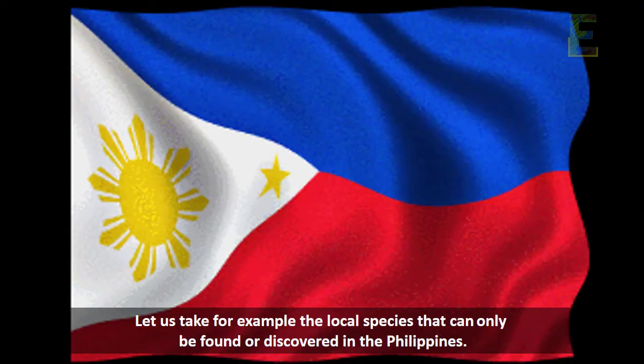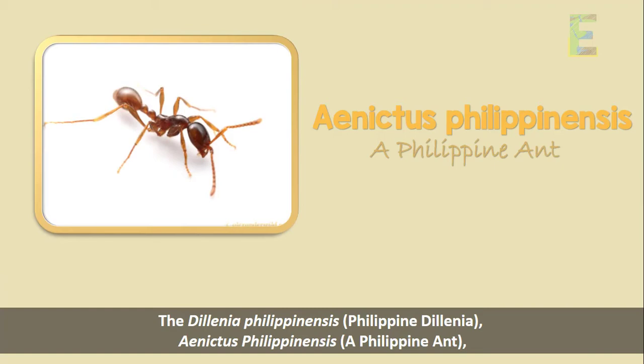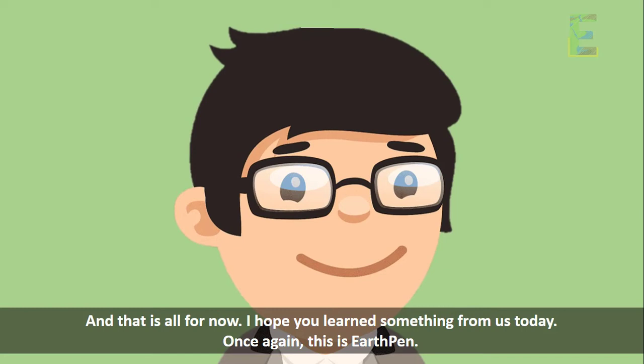Let us take for example local species that can only be found or discovered in the Philippines: Delineia philippinensis or the Philippine Delineia, Enectus philippinensis or the Philippine Ant, Naja philippinensis or the Philippine Cobra, and Nepenthes philippinensis or the pitcher plant in Palawan.